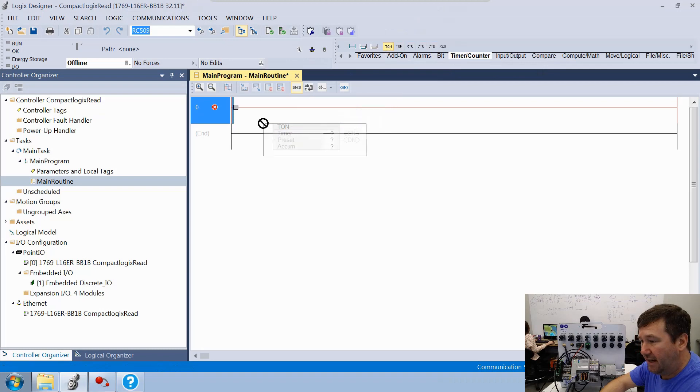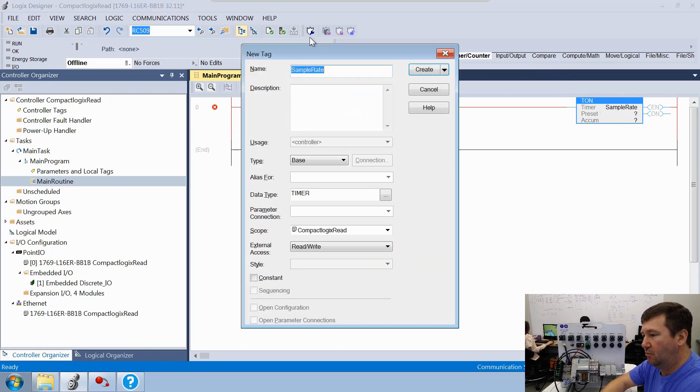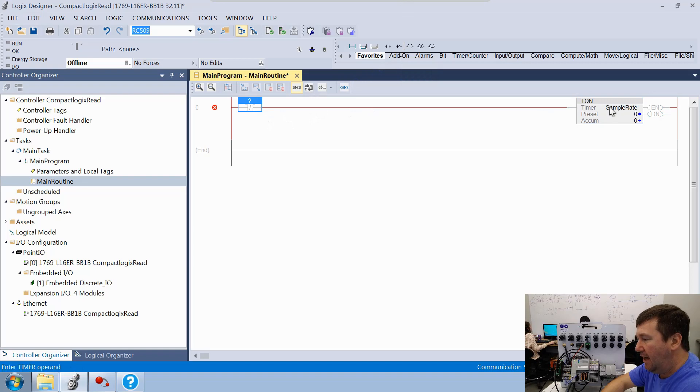We're going to TON down. And we're just going to call this our sample rate. We'll create a new one, and it'll be a data type of timer. Then let's go to our favorites tab and bring on an examine off instruction. We're going to look at that sample rate's done bit. And then we're going to have a preset of 100.